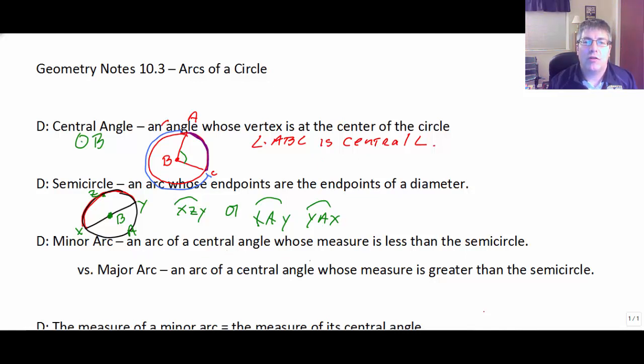And as I mentioned previously, a minor arc is an arc of a central angle whose measure is less than a semicircle. So our minor arc from figure one is arc AC.